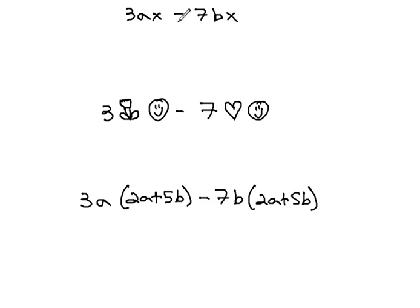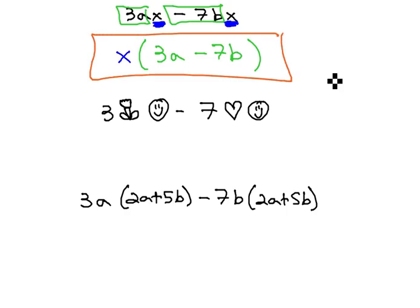3ax minus 7bx. We see both of these factors have this x as a common factor. We'll pull that x out, and when we do, what's left, the 3a minus 7b, is what goes inside the parentheses, and we say it's factored.